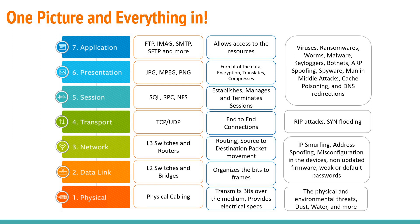The data link layer involves L2 switches and bridges, where bits are organized into frames. The network layer uses L3 switches and routers, where routing and source-to-destination packet movement are taken care of. At layer 2, bits from the physical layer are organized as frames; at layer 3, routing happens very clearly.